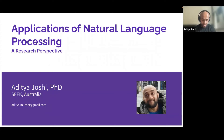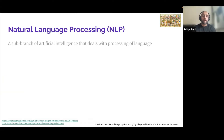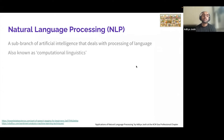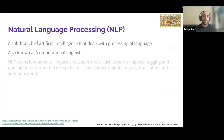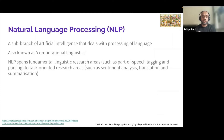I am a data scientist at SEEK, an online employment marketplace, where I work on NLP problems. So what is NLP or Natural Language Processing? NLP is a subfield of artificial intelligence that deals with processing of language — sometimes referred to as computational linguistics. It's a combination of computer science and linguistics, aiming to solve linguistic problems using computing. Today NLP spans fundamental linguistic research areas as well as task-oriented areas such as sentiment analysis, translation, and summarization.